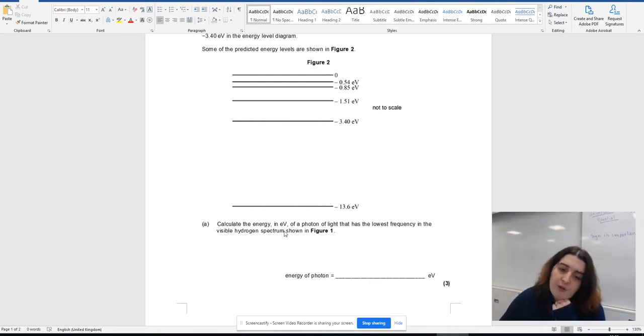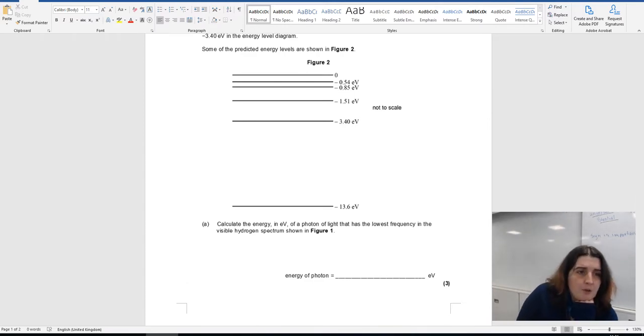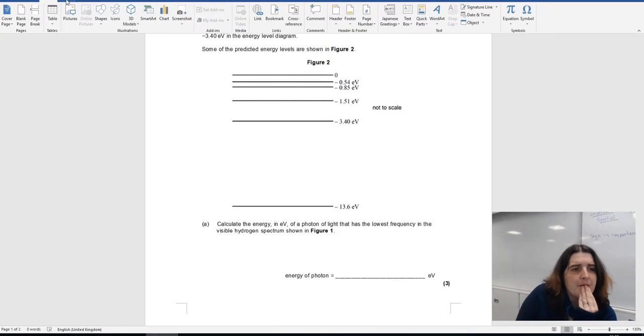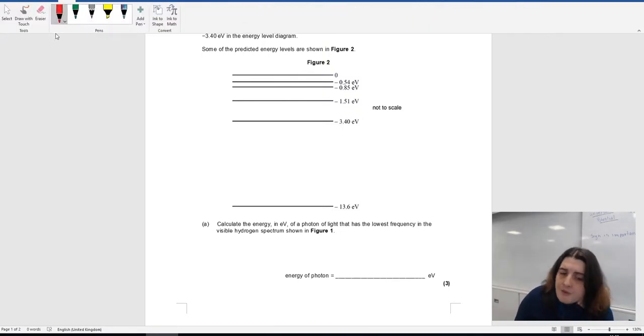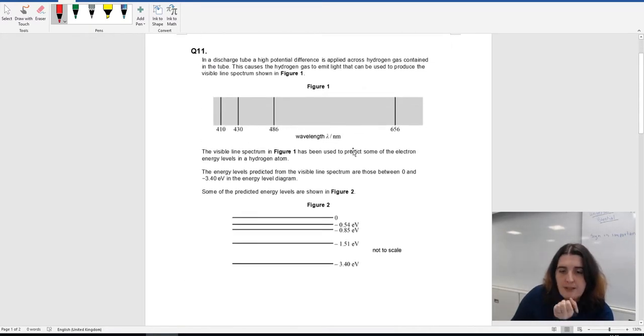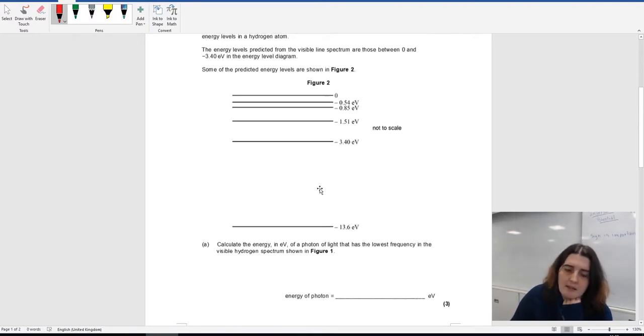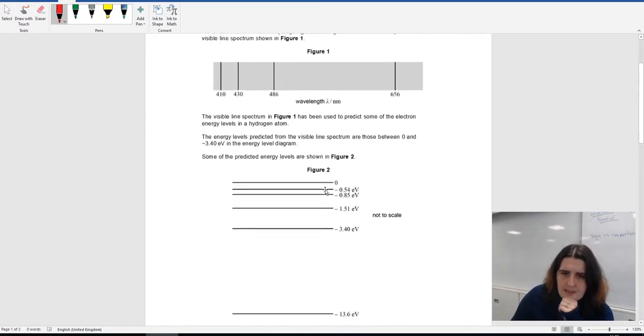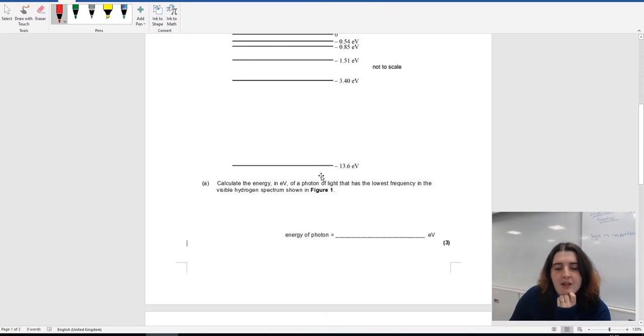Calculate the energy in electron volts of a photon of light that has the lowest frequency in the visible spectrum. If I just grab this here, the lowest frequency means the biggest wavelength. So you're after the biggest wavelength. So you're going to pick the thing with the biggest wavelength, which is 656 nanometers there. You can pause the video, have a go yourself, try to work out what this energy of the electron volt is.